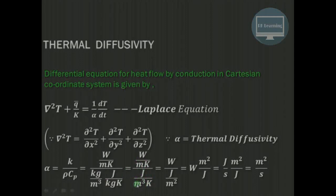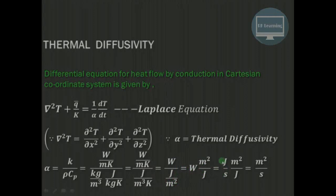The denominator ρ·c gives units of J/(m³·K), which represents energy stored per unit volume per unit change in temperature. Simplifying, the Kelvin units cancel and one meter cancels, leaving W·m²/J. Since a watt is joules per second, the joules cancel, and we are left with units of m²/s for thermal diffusivity.